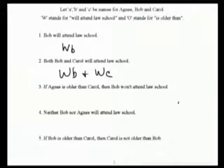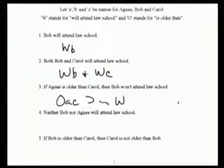So this is the way we would do 'both Bob and Carol will attend law school' — number two. Slightly more complicated, number three. Alex? Yes, right, because now we do have a binary predicate in 'older than.'